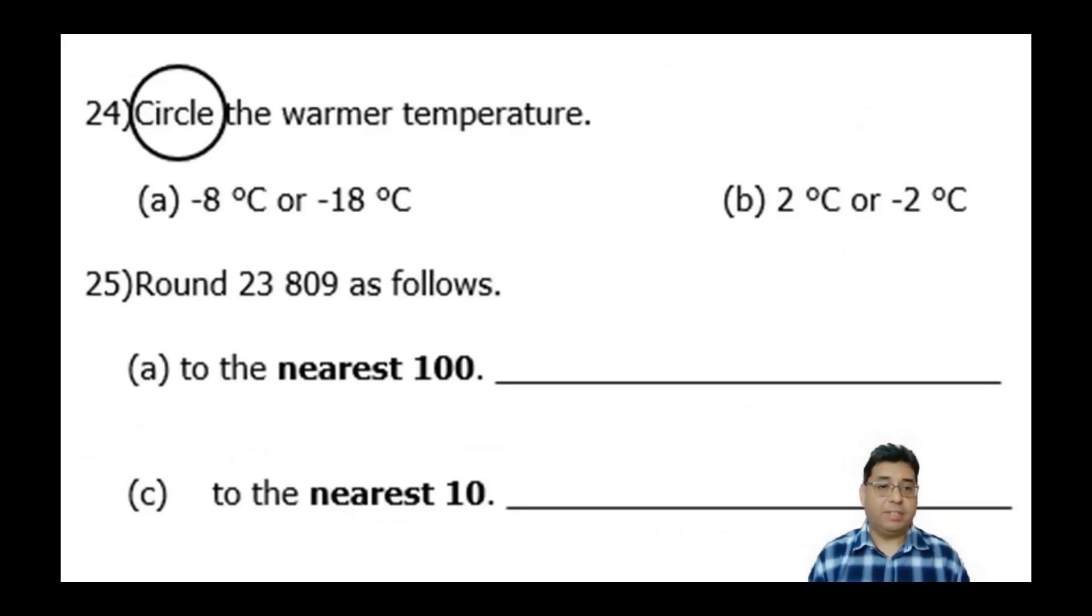Number 24 just says circle the warmer temperature for letter A and letter B. And 25 just asks you to round 23,809 as follows. So I won't read these. They're there for you to look at.